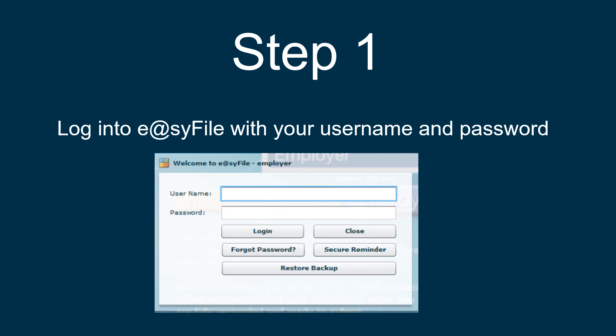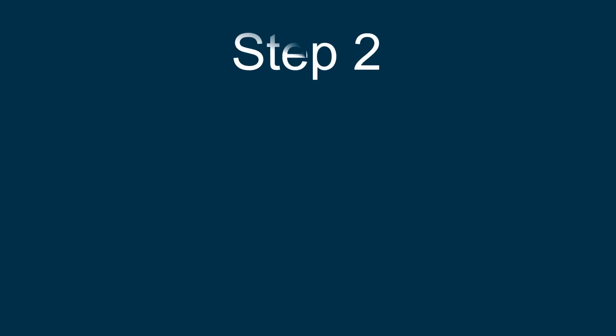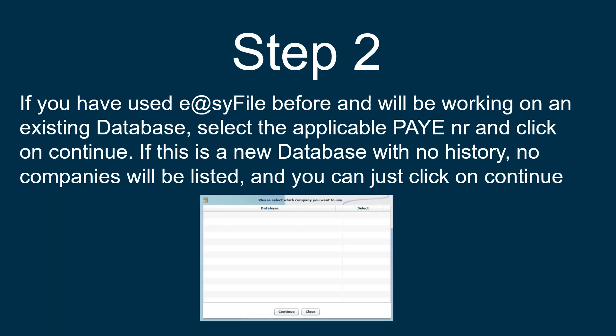Log into EasyFile with your username and password and click on Login. If you have used EasyFile before and will be working on an existing database, you can select the applicable Pay As You Earn number and click on Continue. If this is a new database with no history, no companies will be listed and you can just click on Continue.